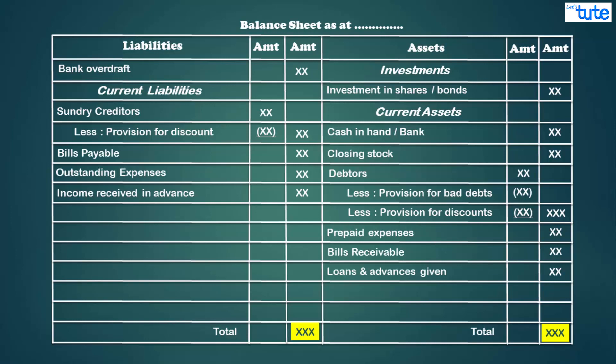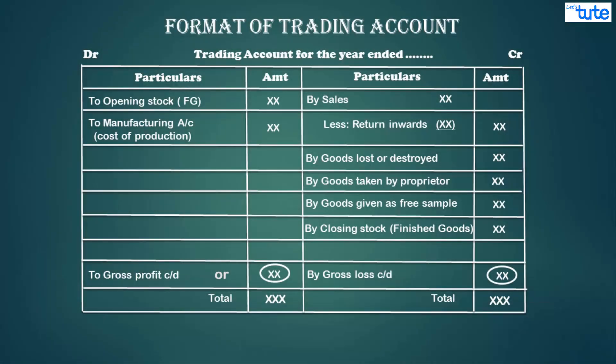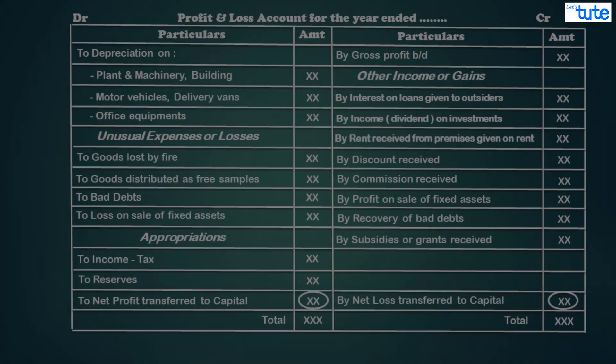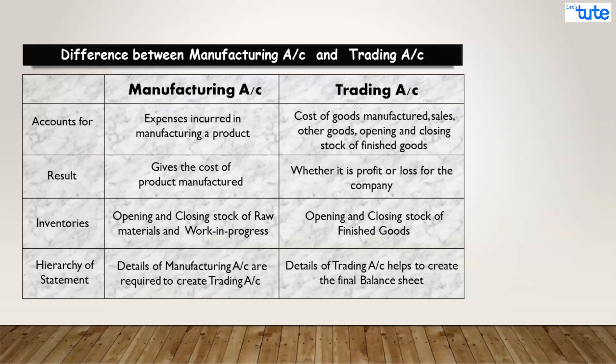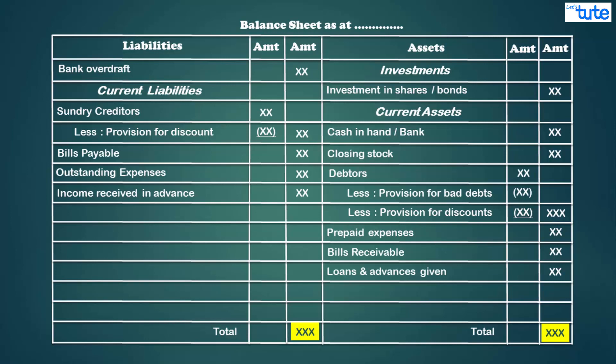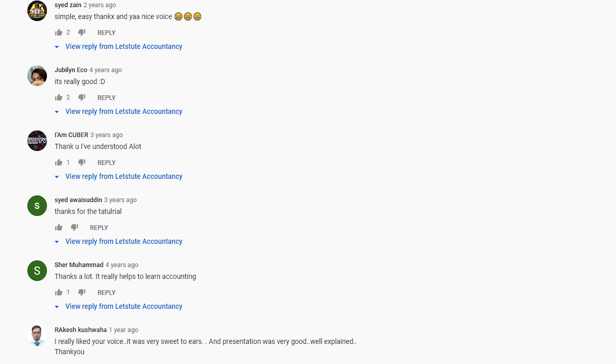A balance sheet need not be balanced in the traditional sense, but total assets must always equal total liabilities. That concludes today's session, where we covered the formats of trading account, profit and loss account, and balance sheet, along with the four major differences between manufacturing account and trading account. In the next session, we will cover important and star-marked adjustments with their effects. If you have any doubts, feel free to ask in the comment section.